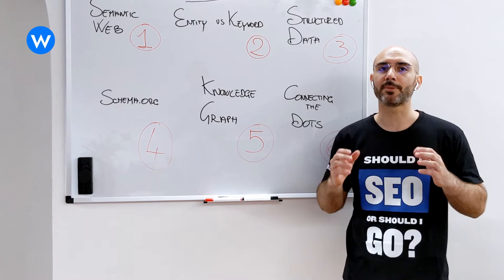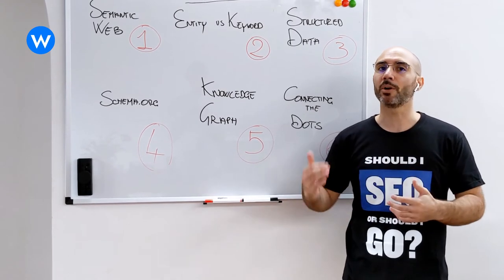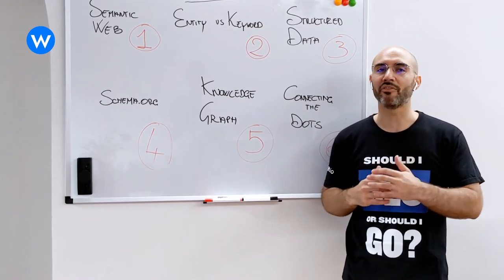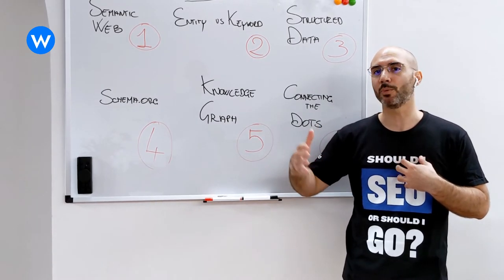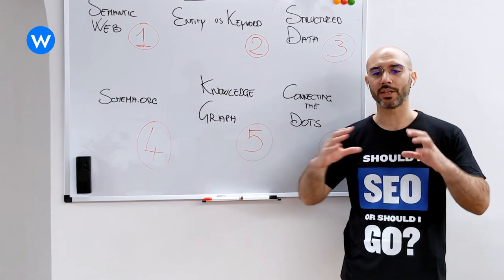For instance, going back to the example I was making before: me, Gennaro, works, so he is affiliated with WordLift. This in schema can be described in this way.